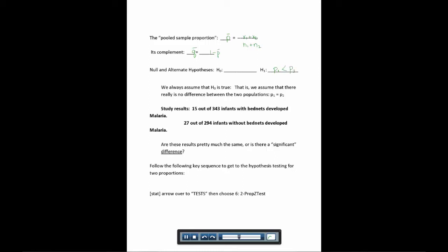So here we'll lay it out like this. P1 is less than P2. And for our null hypothesis, it always has an equal sign, just like we did last chapter. So P1 equals P2.